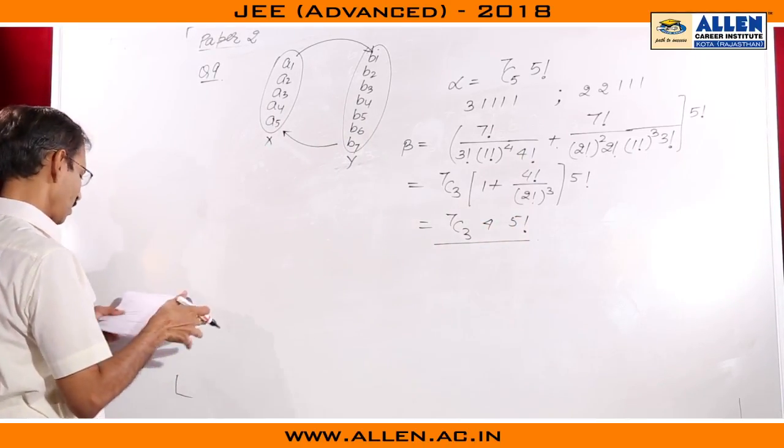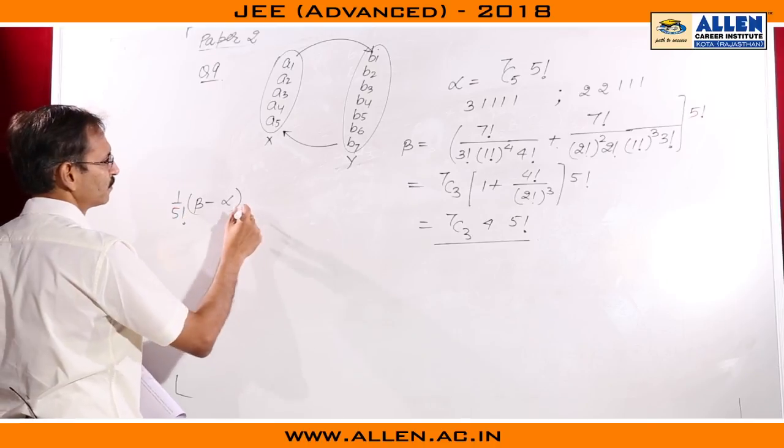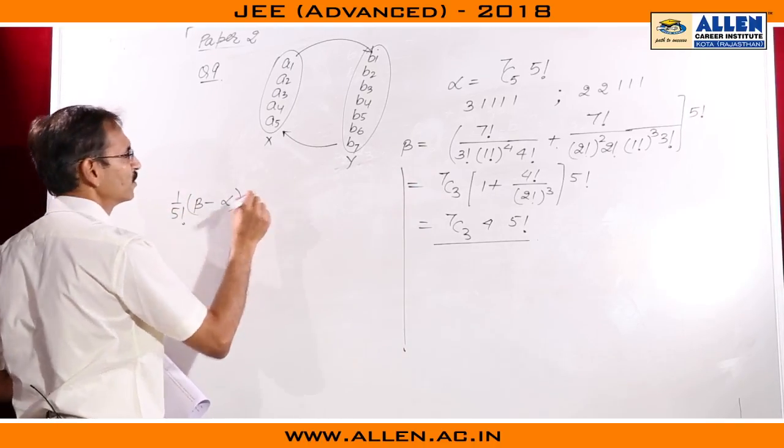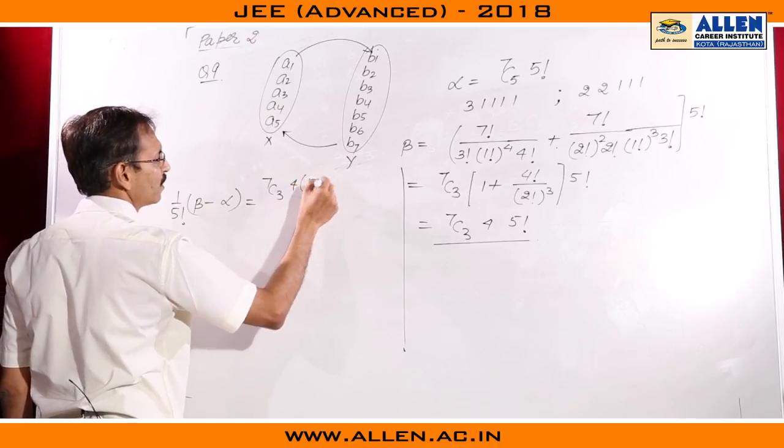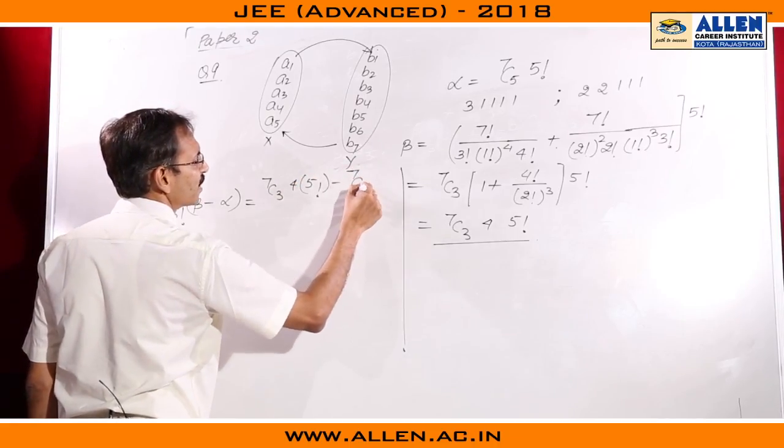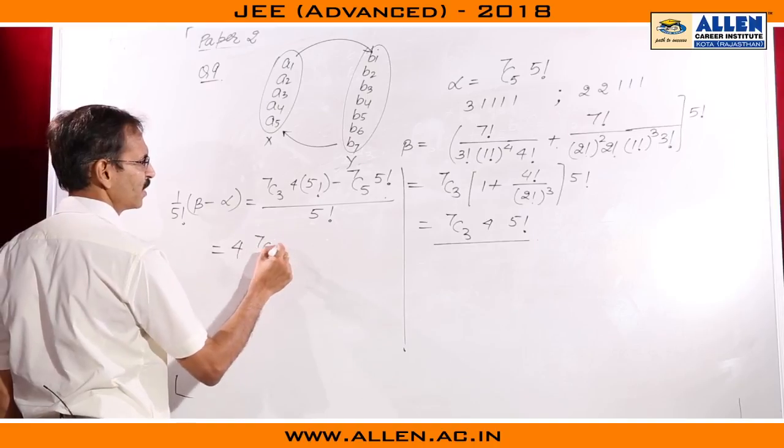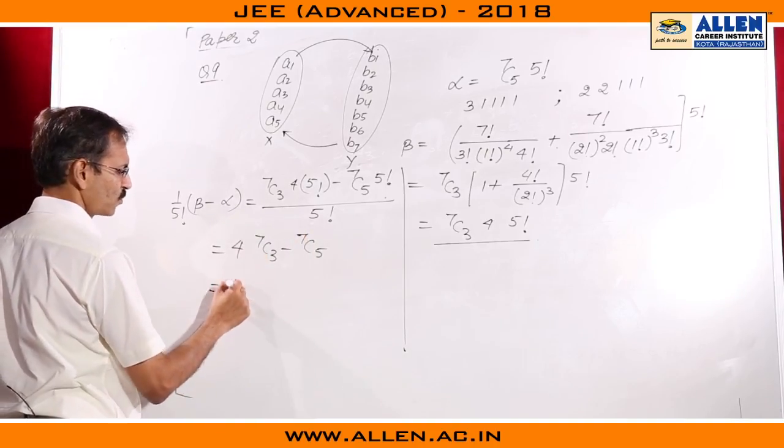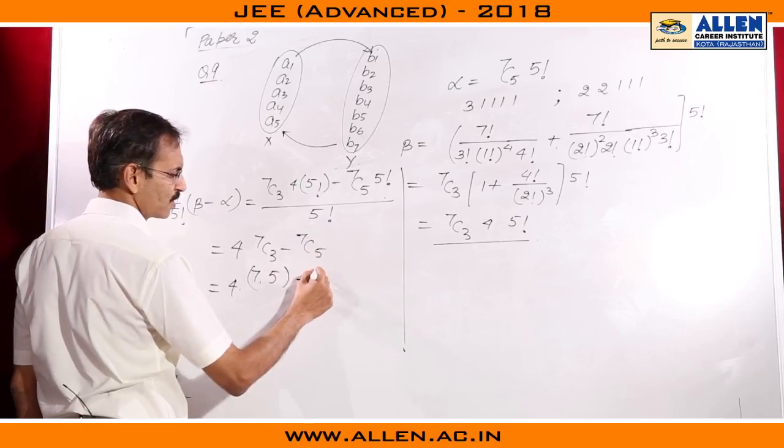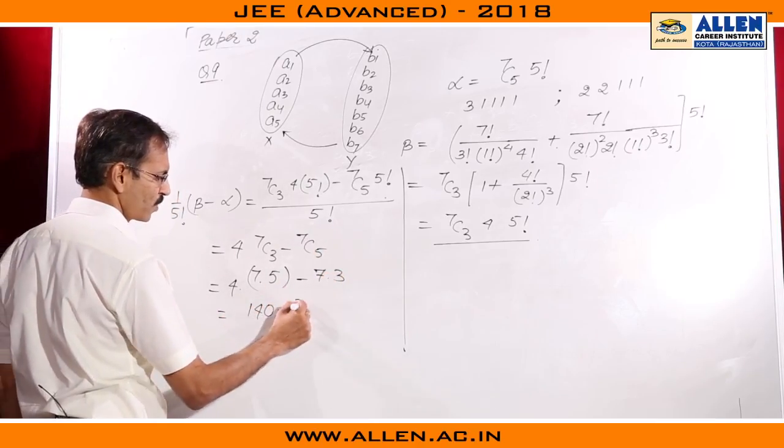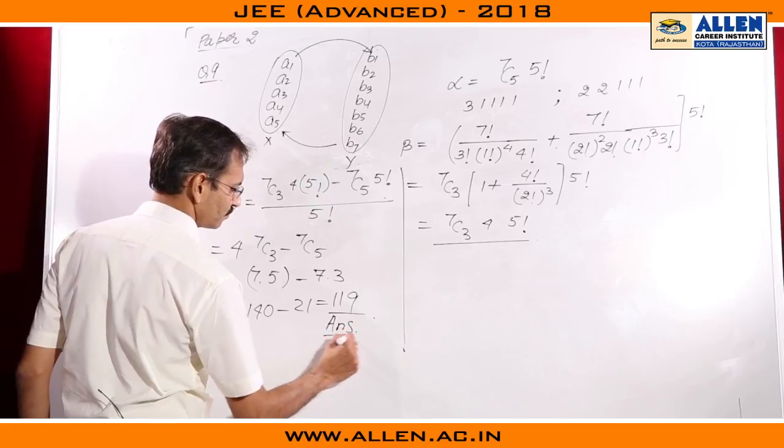We have the value of alpha and beta. Now we will calculate beta minus alpha divided by 5 factorial. To find this value, beta is 7C3, 4 into 5 factorial minus 7C5 into 5 factorial whole divided by 5 factorial, so it is 4 times 7C3 minus 7C5. This is 4 times 7 into 5, 6 is cancelled, 4 factorial is cancelled, minus 7 into 3. This gives us 140 minus 21 or 119 which is our answer.